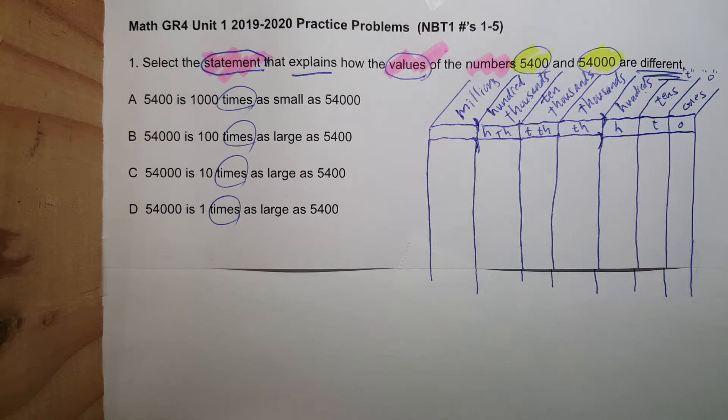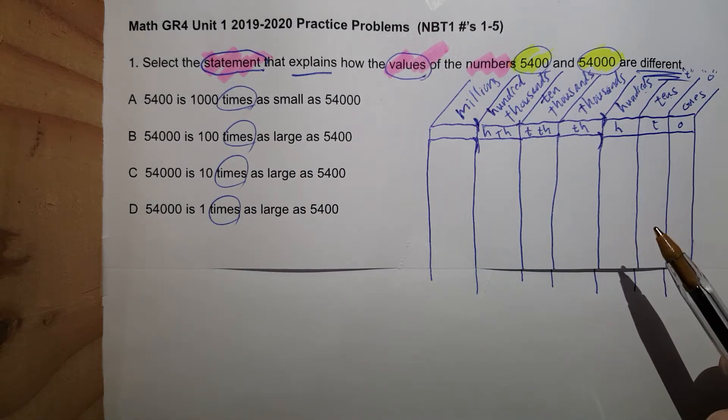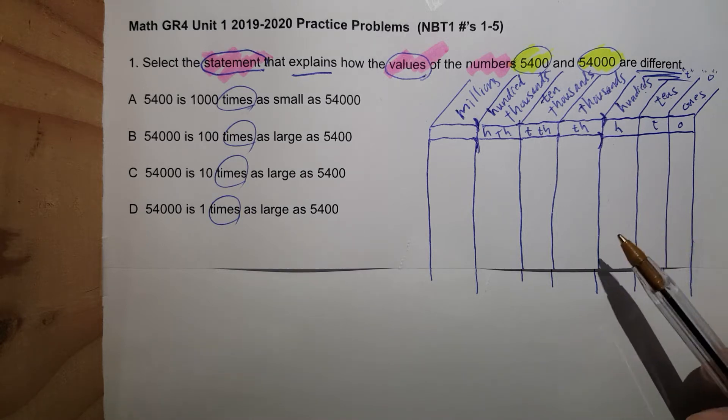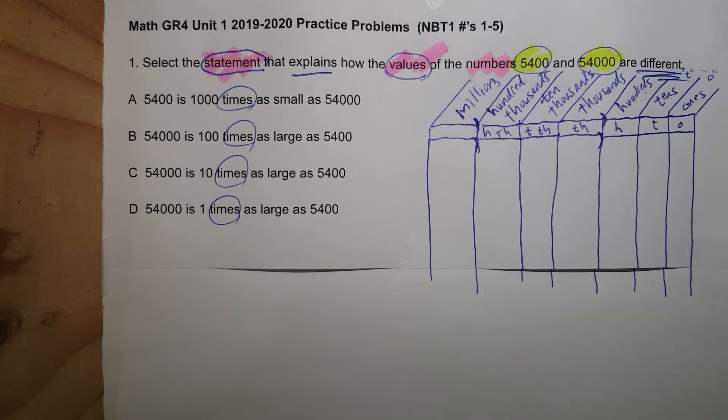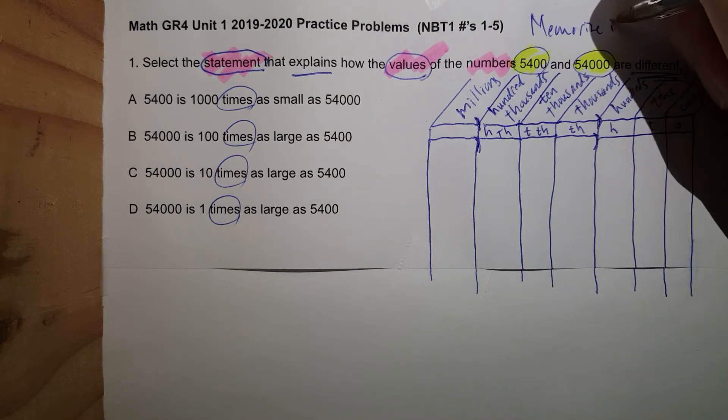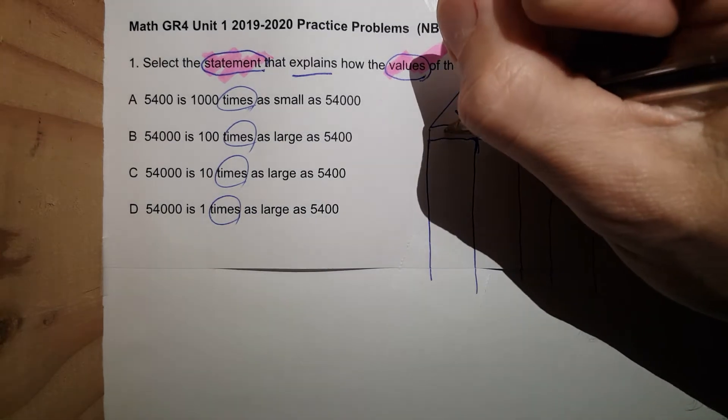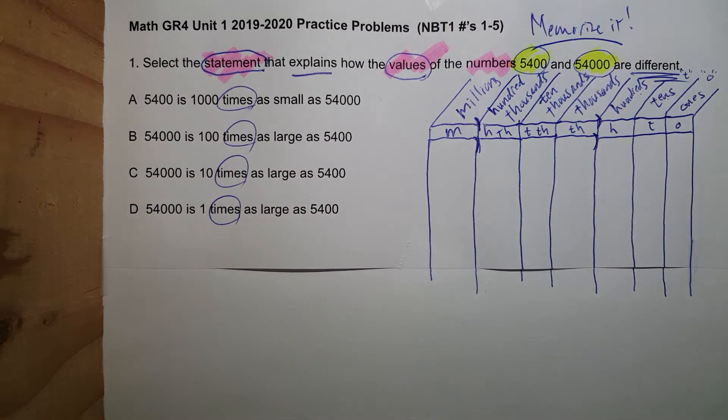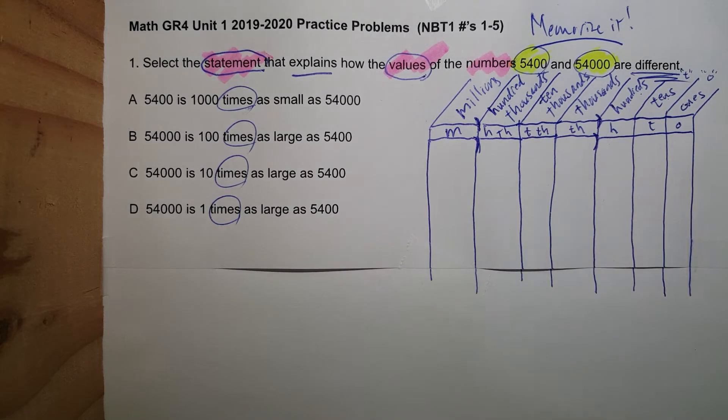Millions. For most of these problems in Unit 1, Unit 2, even some in Unit 3, 4, and 5, you can use the place value chart to help you solve them. It will make life so much easier, but you need to memorize it. Millions will stand for M. And then you go to ten millions, hundred millions. We're just going to stop right here.